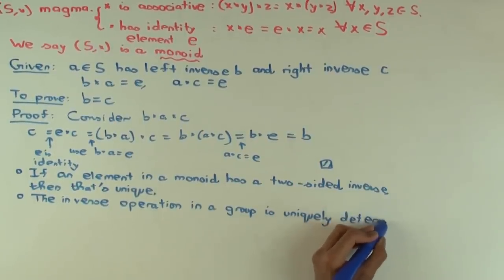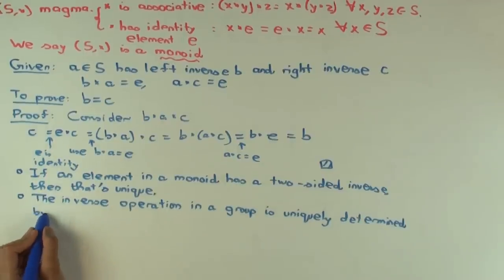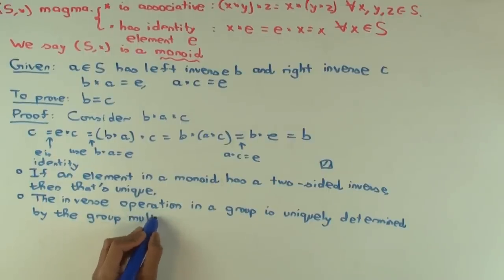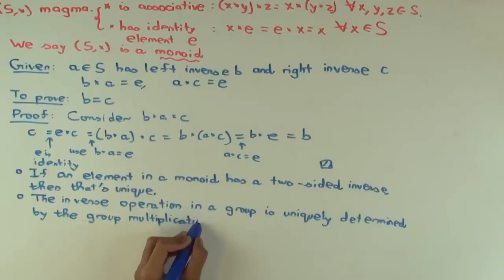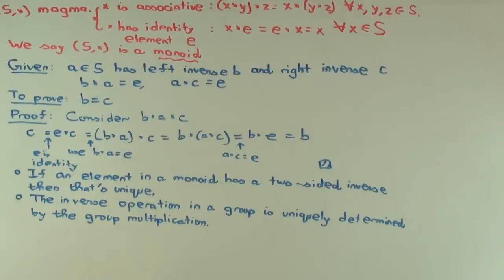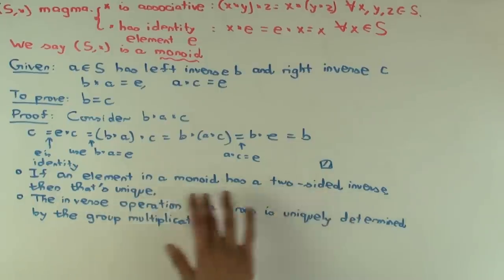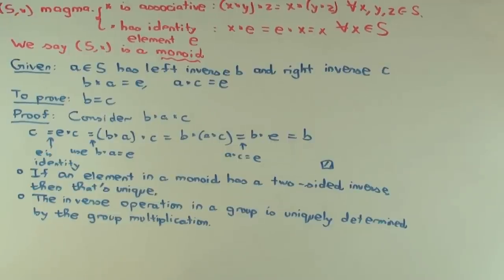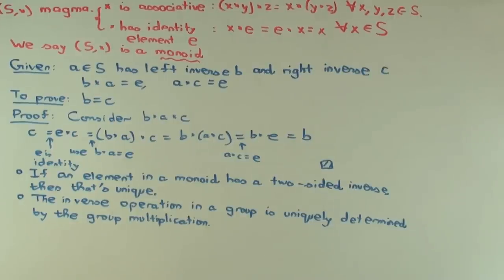So, can you explain that? Inverse operation in a group... What do I mean by that? Okay. So, suppose you're given a group, right? There's a group multiplication there. Now, by definition of group, there's always a two-sided inverse to everything. Now, the question is, can you have another two-sided inverse for any element? Or is the two-sided inverse unique? Unique by the above thing, right?